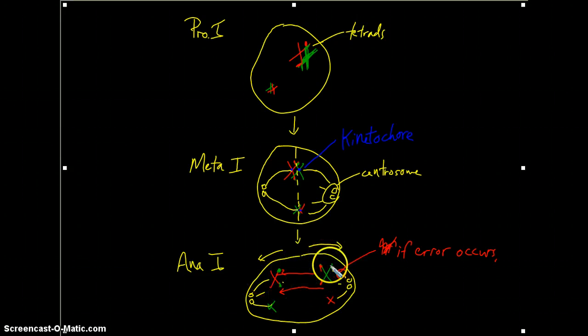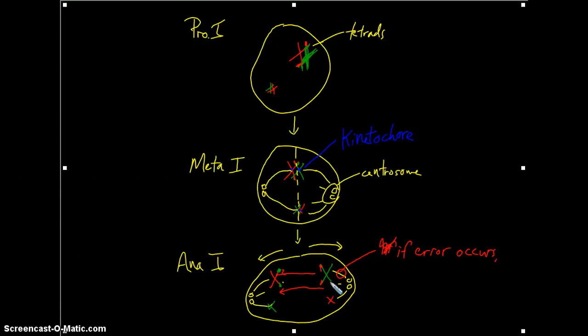So what you wind up with are extra or missing chromosomes in cells. And that's how we wind up with conditions like Turner syndrome or Klinefelter syndrome or Trisomy 21 or Down syndrome if errors occur during the production of these gametes.